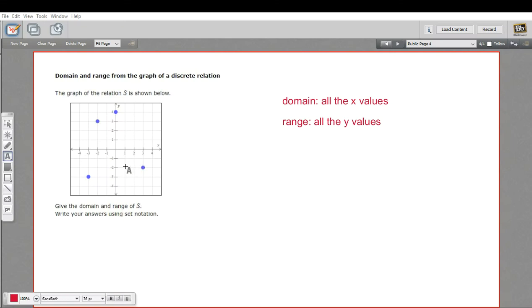This thing right here is called a relation. A relation is just a set of ordered pairs. So there's an x and a y value for each of these points.